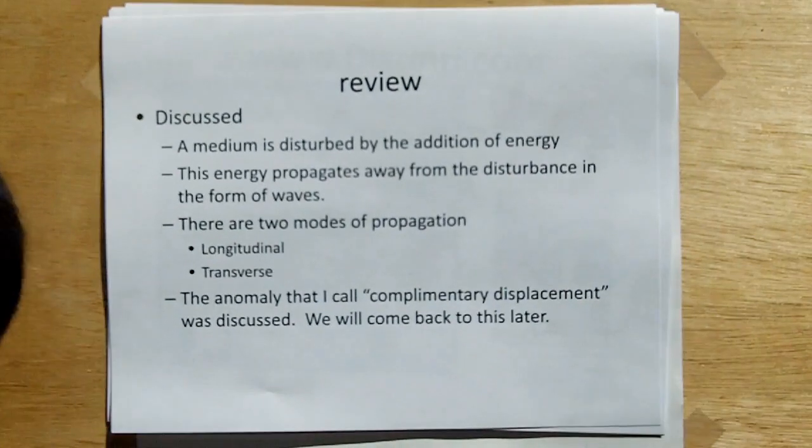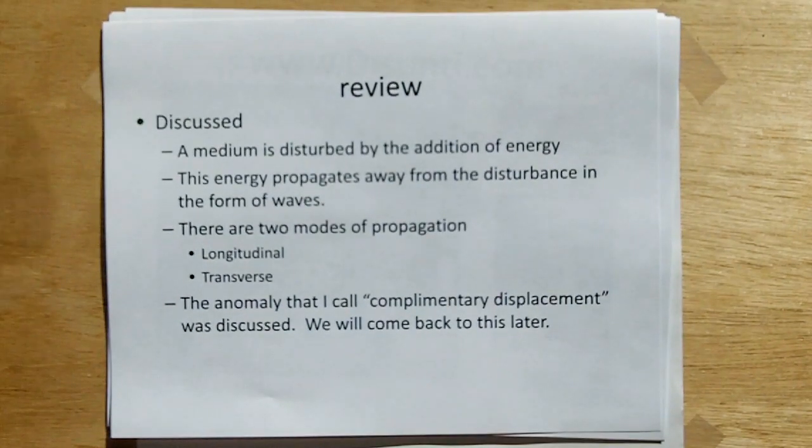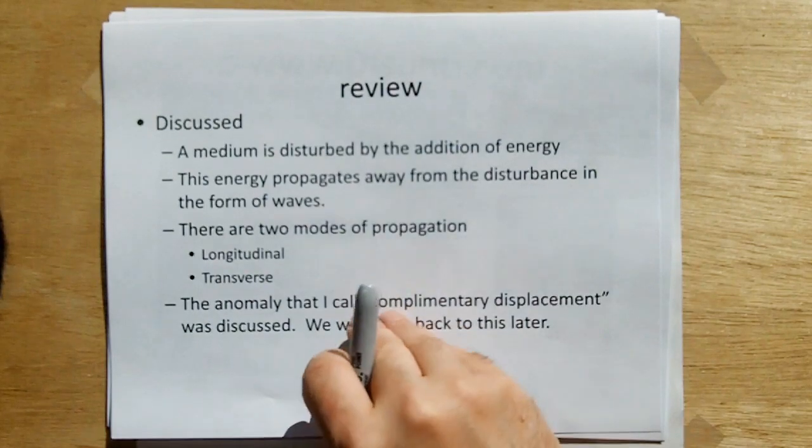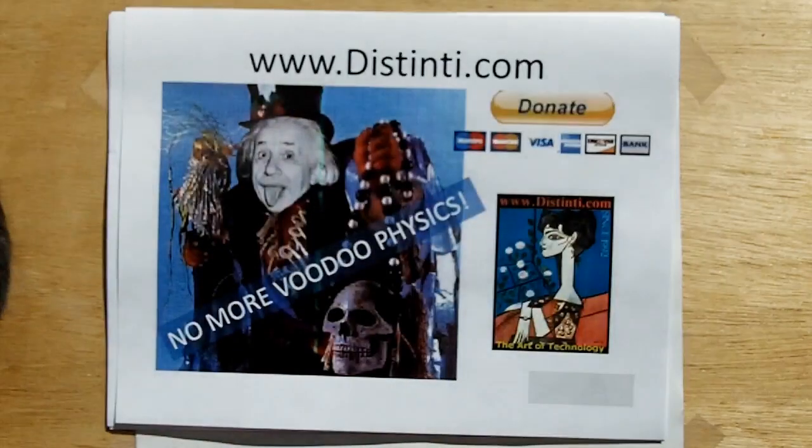So what we reviewed? We reviewed that a medium is disturbed by the addition of energy. That would be a wave. This energy propagates away from the disturbance in the form of waves. And there are two modes of propagation. Longitudinal and transverse. And an anomaly that I call complementary displacement was discussed. We will come back to this later. Thank you very much.